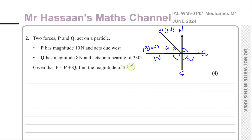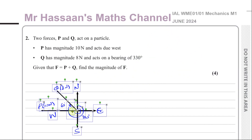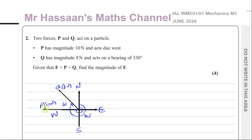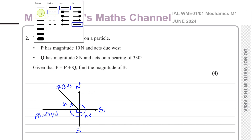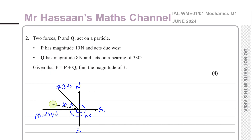So the resultant force is going to act somewhere between them. The resultant force is going to act somewhere between them — obviously closer to the 10 Newtons since it's a bigger force. So F is going to act somewhere in this direction, and we have to find the magnitude of F.